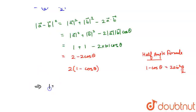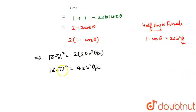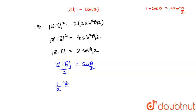So |a − b|² equals 4sin²(θ/2). Taking the square root, |a − b| equals 2sin(θ/2). Transposing the 2, |a − b|/2 equals sin(θ/2), which can be written as (1/2)|a − b| = sin(θ/2). Hence proved. I hope you understood the explanation. Thank you.